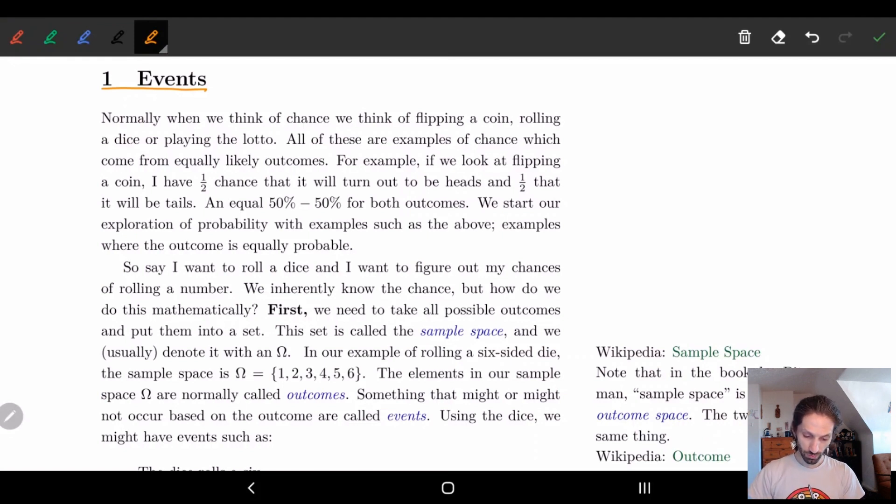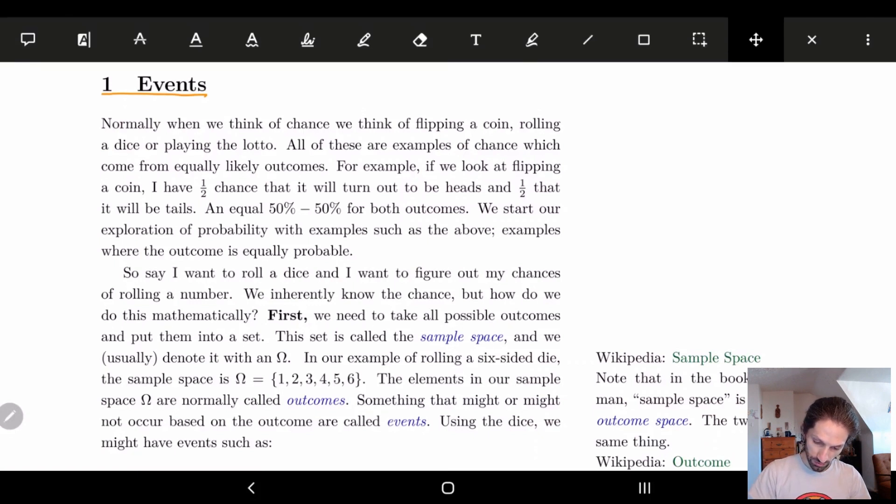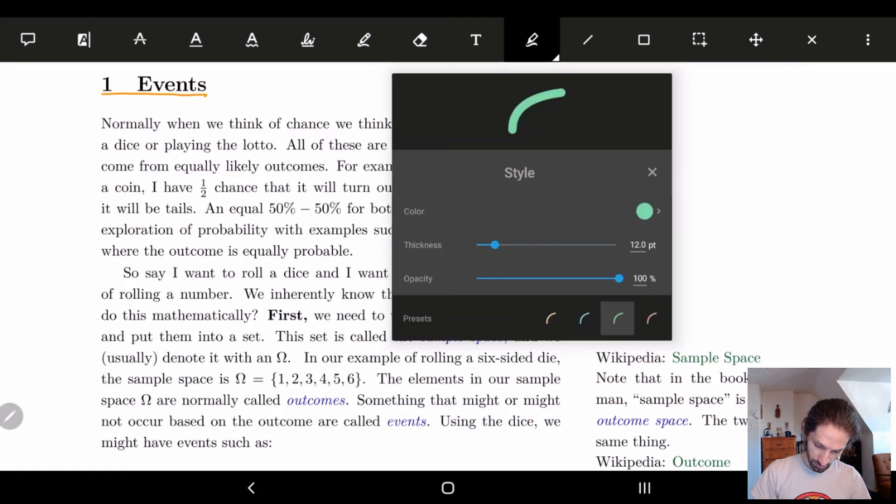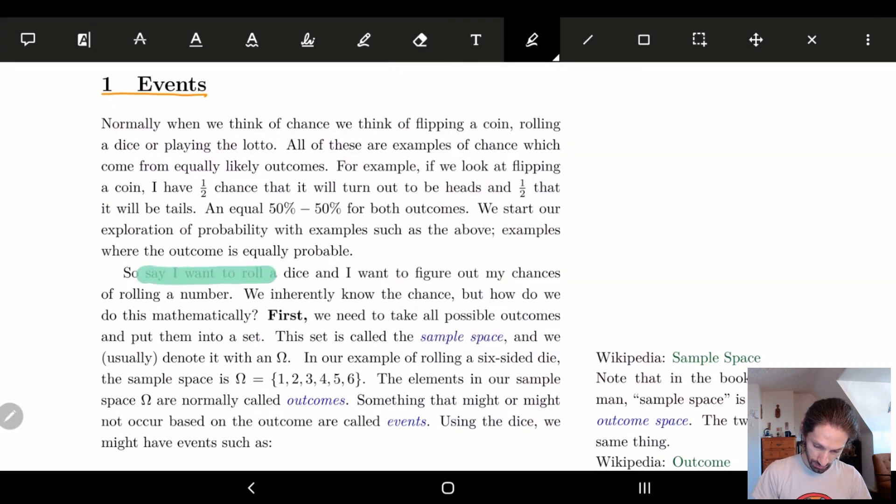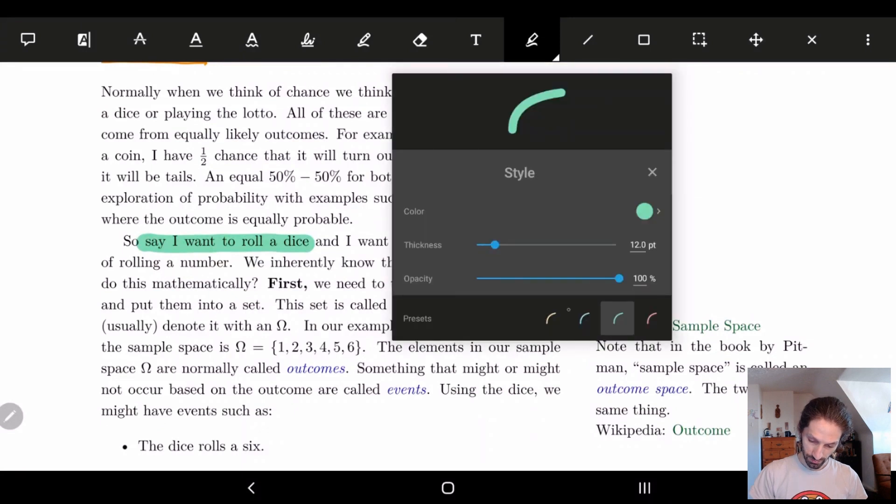Let's start with rolling a dice. Say I want to roll a dice and figure out my chances of rolling a particular number. Inherently we know this, right? We know it's one sixth of a chance. There's six sides on a fair dice. But how do we do this in a more mathematical way? First off, we're going to need to list all the possible outcomes.